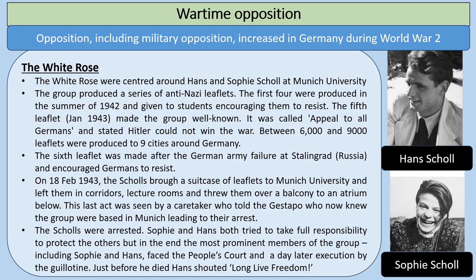The White Rose were a group centred around Hans and Sophie Scholl at Munich University. Their opposition involved producing a series of anti-Nazi leaflets. The first four were produced in the summer of 1942 and given to students, encouraging them to resist. The fifth leaflet, in January 1943, called 'Appeal to All Germans,' made the group well known and stated that Hitler just could not win the war. Between 6,000 and 9,000 leaflets were produced and distributed in nine cities around Germany. The sixth leaflet was made after the German army's failure at Stalingrad. On the 18th of February 1943, the Scholls brought a suitcase of leaflets to Munich University and left them in corridors, lecture rooms, and threw them over a balcony — a caretaker saw this and told the Gestapo, who knew the group was based in Munich, and it led to their arrest.